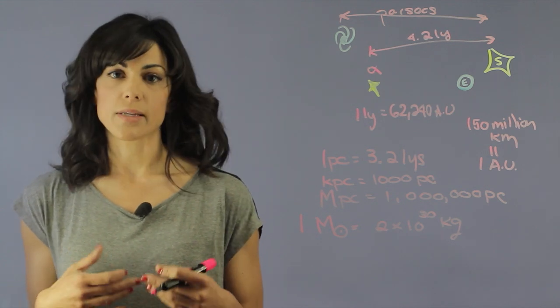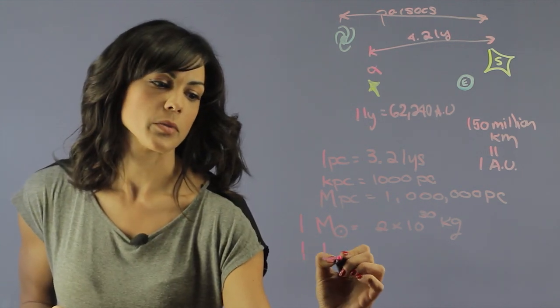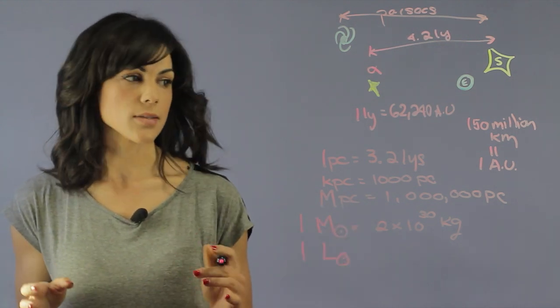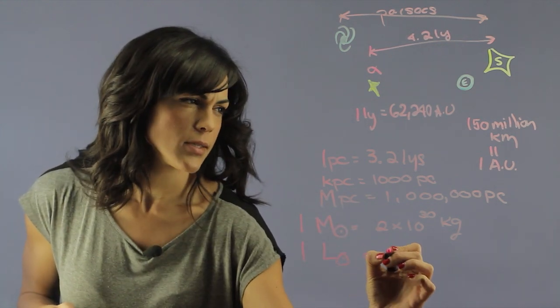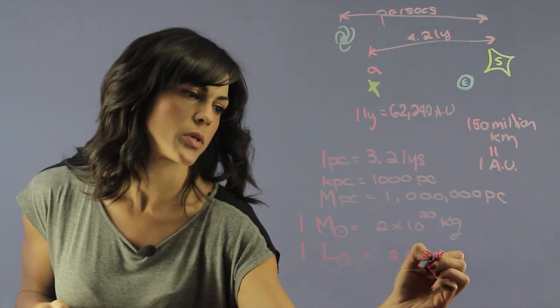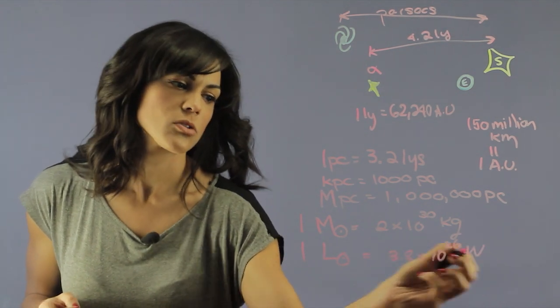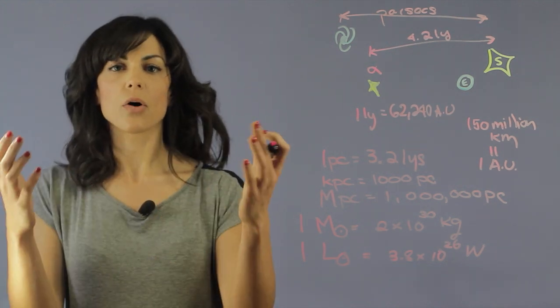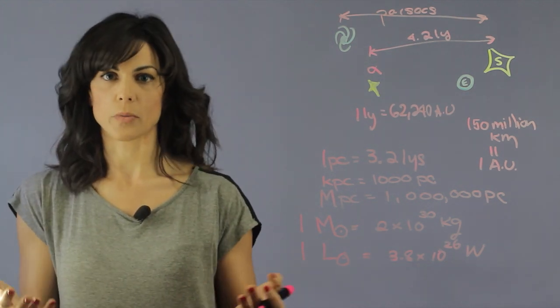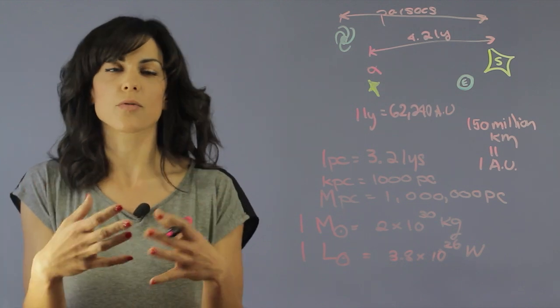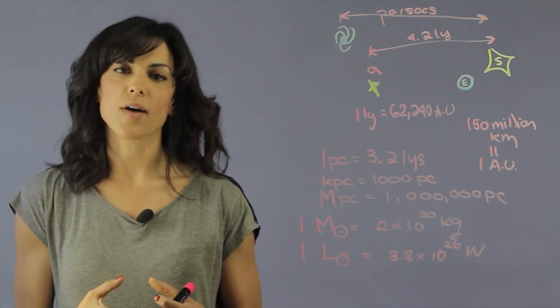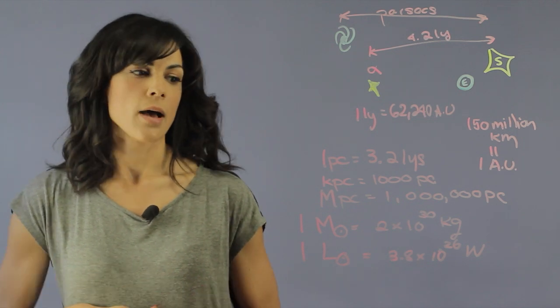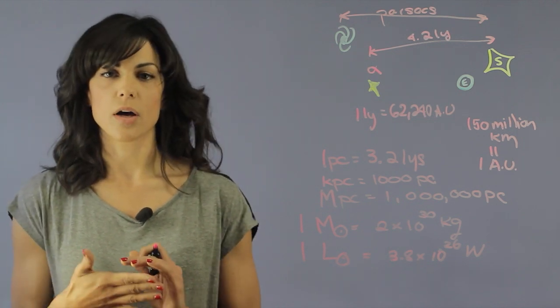Another handy one is the solar luminosity. So 1 solar luminosity. And by the way the circle with a dot in the middle is to symbolize the Sun. And this is 3.8 times 10 to the 26 watts. So it's kind of the power that the star is outputting. So when we look at a star we say like oh that star is like 4 solar luminosities. And so then therefore we have a reference of actual power. And these are some of the references that we use in astronomy. There are a lot more. But these are some of the most commonly used.